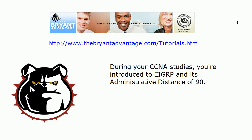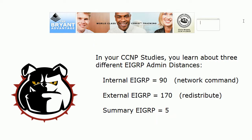During your CCNA studies, you're introduced to EIGRP and its administrative distance of 90. That admin distance, of course, is the level of believability of a route source, whether that be a routing protocol or a static route. Now, there are actually three administrative distances that go with EIGRP. You see most of these in your NP studies. First off, we have internal EIGRP routes that have that AD of 90 that you're familiar with, and that's what you get when you introduce a route into EIGRP with the network command.